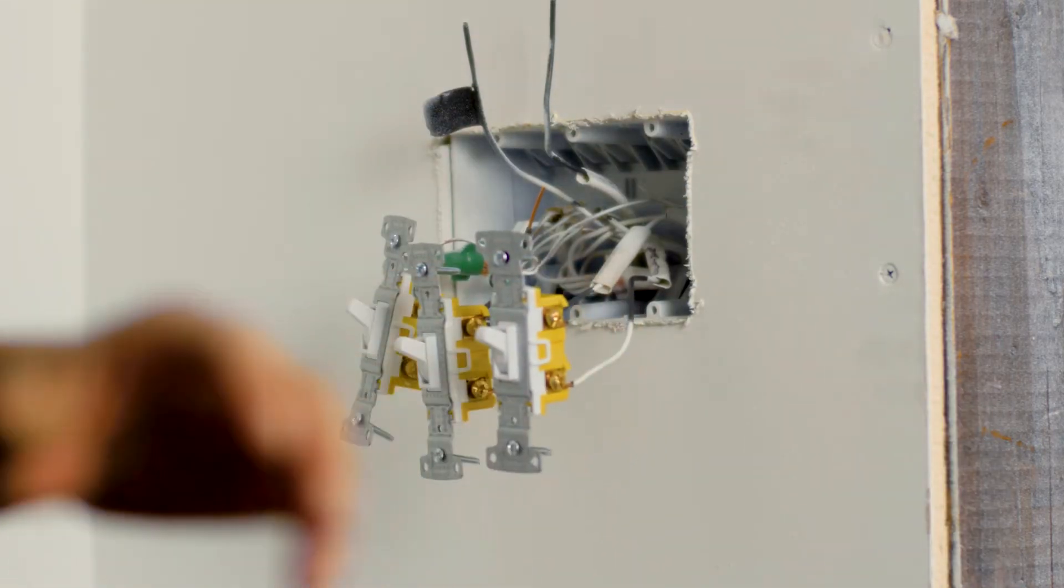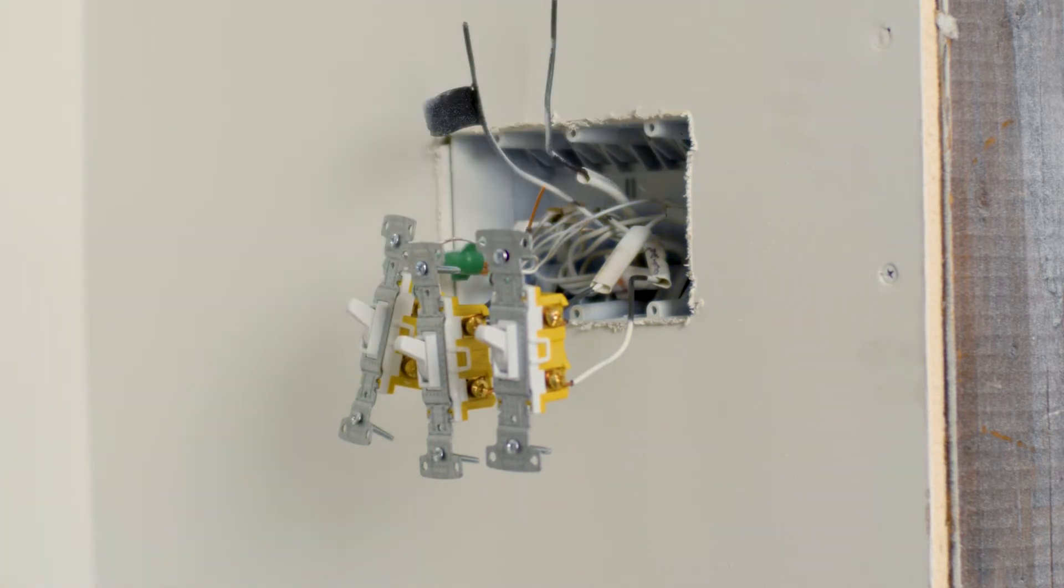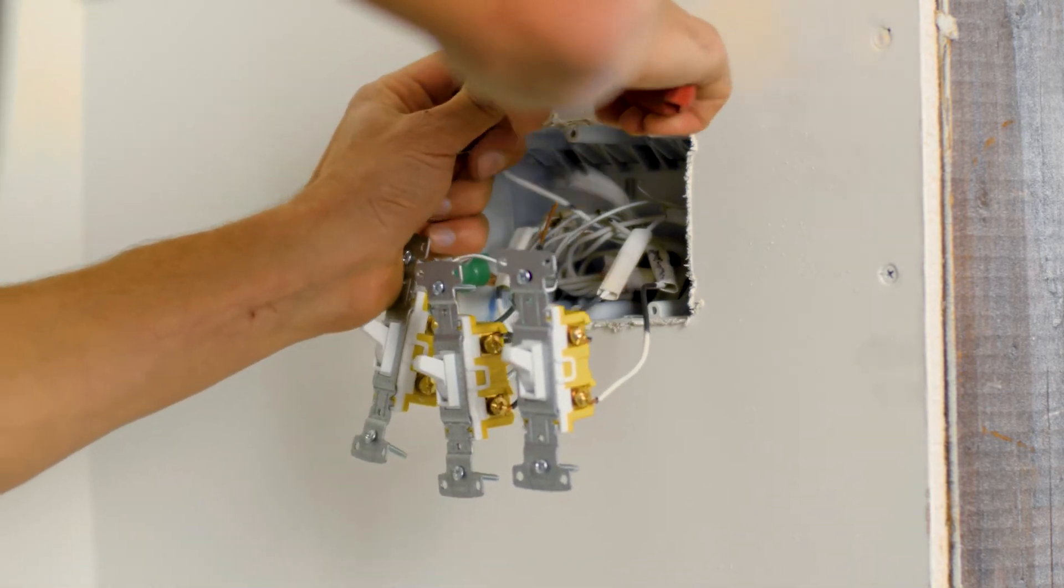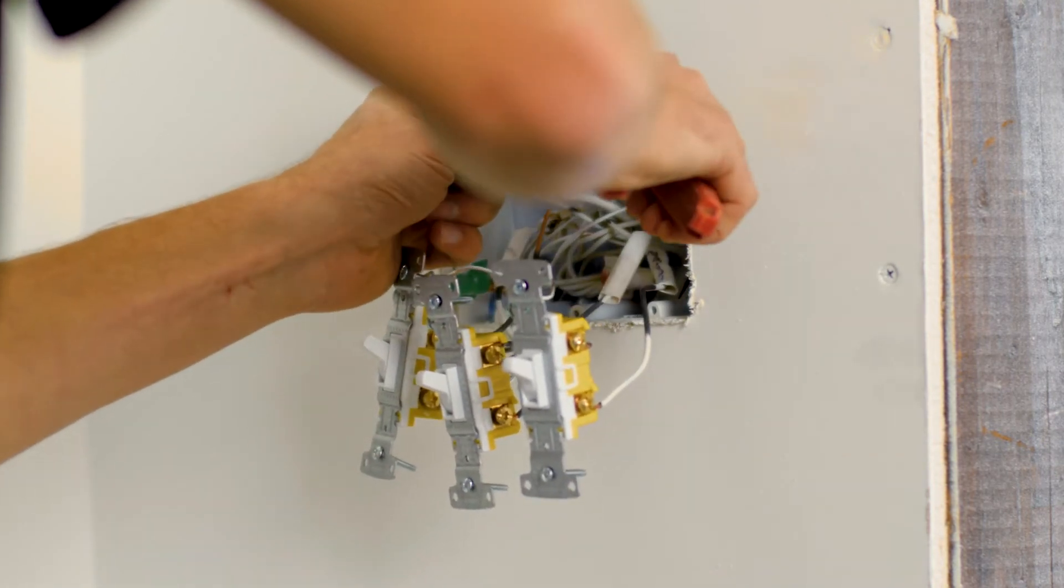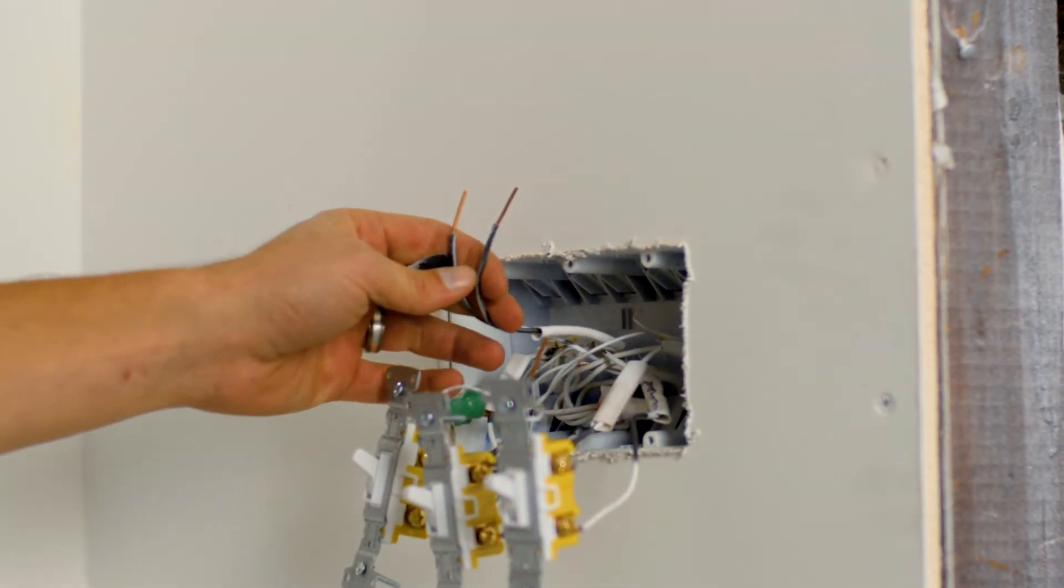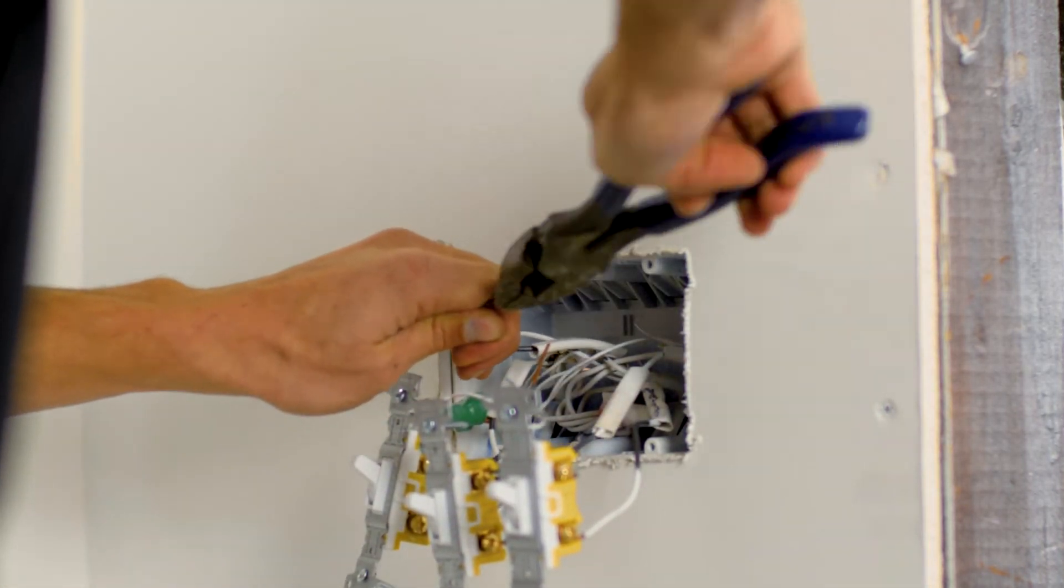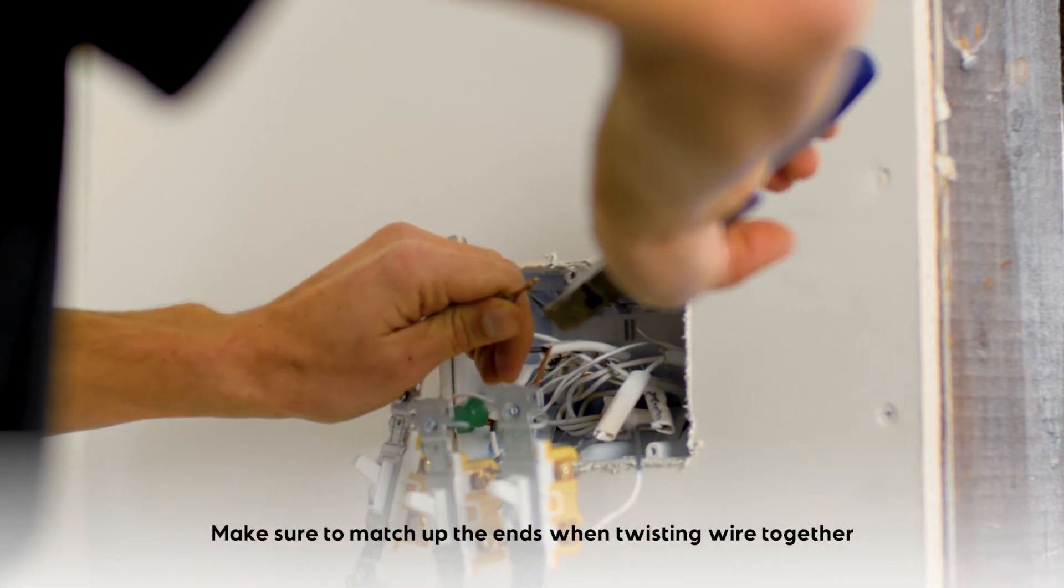Now, these are my hot conductors. I'm going to verify with my voltage detector, an insulated voltage detector. I'm going to verify that they're dead. I'm going to strip back just a little bit more, that's about an inch of conductor. I'm going to take my linesman pliers, the flats of my linesman pliers. I'm going to take two of my three conductors and give them a pre-twist. Careful to match up the ends.